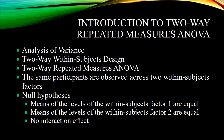If you had one within-subjects factor and one between-subjects factor, that would still be a two-way repeated measures ANOVA. Oftentimes we refer to that design as a mixed ANOVA. So in this type of two-way repeated measures ANOVA, we have two within-subjects factors, and the same participants are observed across both of them.